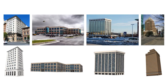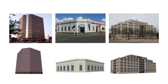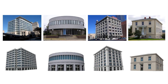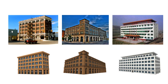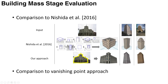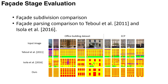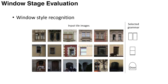Here we show some of the results. For each building, the top image shows the input photo and the bottom image is the output 3D building. We evaluated each stage of our approach. For the building mass stage, we compare our approach to Nishida et al. and the vanishing point approach. For the facade stage, we compare our facade subdivision and our entire facade stage to the previous approaches. For the window stage, we qualitatively evaluate our approach. Please refer to the paper for more details.